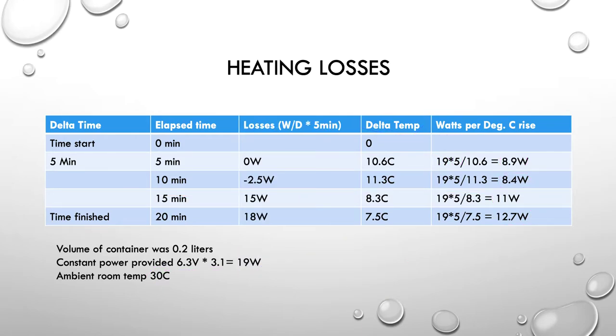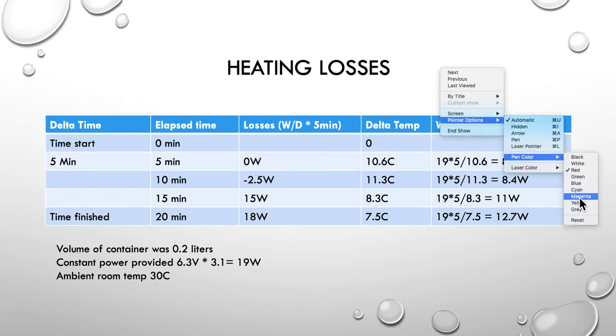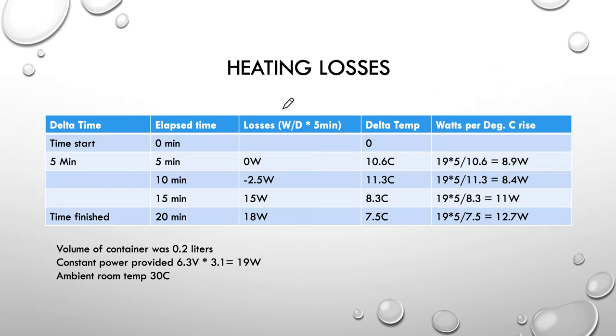So, the heating losses. I've done another little calc here and added this column now. We've still got our delta temperature. Our watts per degree rise and all I've done is said the watts divided by the delta temperature multiplied by 5 kind of gives you the losses, gives you some idea what the losses are. Obviously, there are no losses when you start.